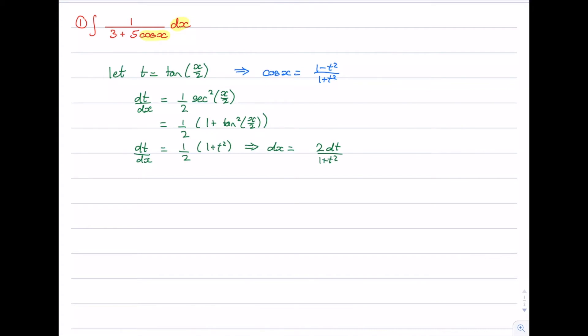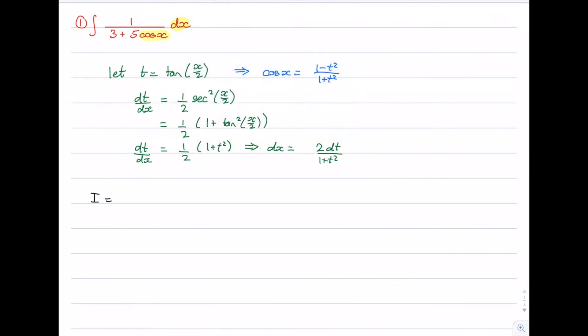So now we can go ahead and substitute in everything. So for our integral, just call it I, we're looking at integrating 1 over 3 plus 5 times cos of x which is 1 minus t squared over 1 plus t squared times dx. But what is dx? dx is 2 over 1 plus t squared dt.